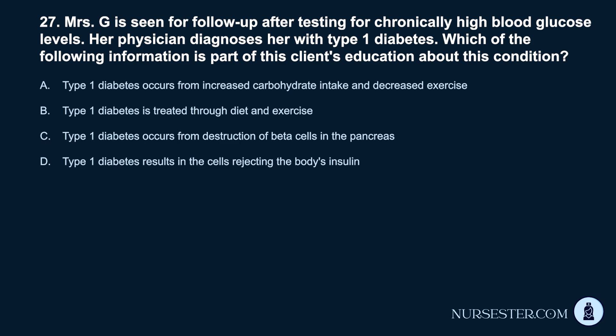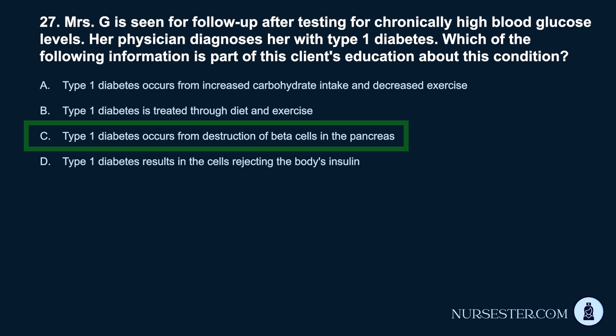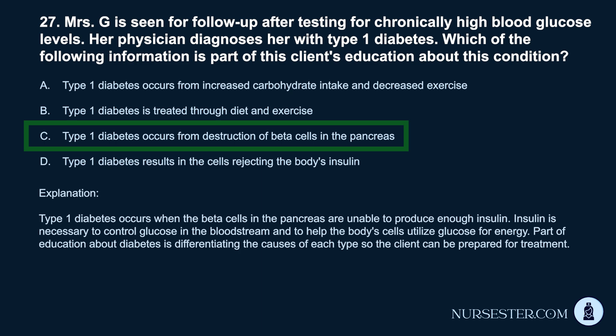Question 27. Mrs. G is seen for follow-up after testing for chronically high blood glucose levels. Her physician diagnoses her with type 1 diabetes. Which of the following is part of this client's education? a. Type 1 diabetes occurs from increased carbohydrate intake and decreased exercise. b. Type 1 diabetes is treated through diet and exercise. c. Type 1 diabetes occurs from destruction of beta cells in the pancreas. d. Type 1 diabetes results in the cells rejecting the body's insulin. Correct answer: c. Type 1 diabetes occurs when the beta cells in the pancreas are unable to produce enough insulin. Insulin is necessary to control glucose in the bloodstream and help the body's cells utilize glucose for energy.